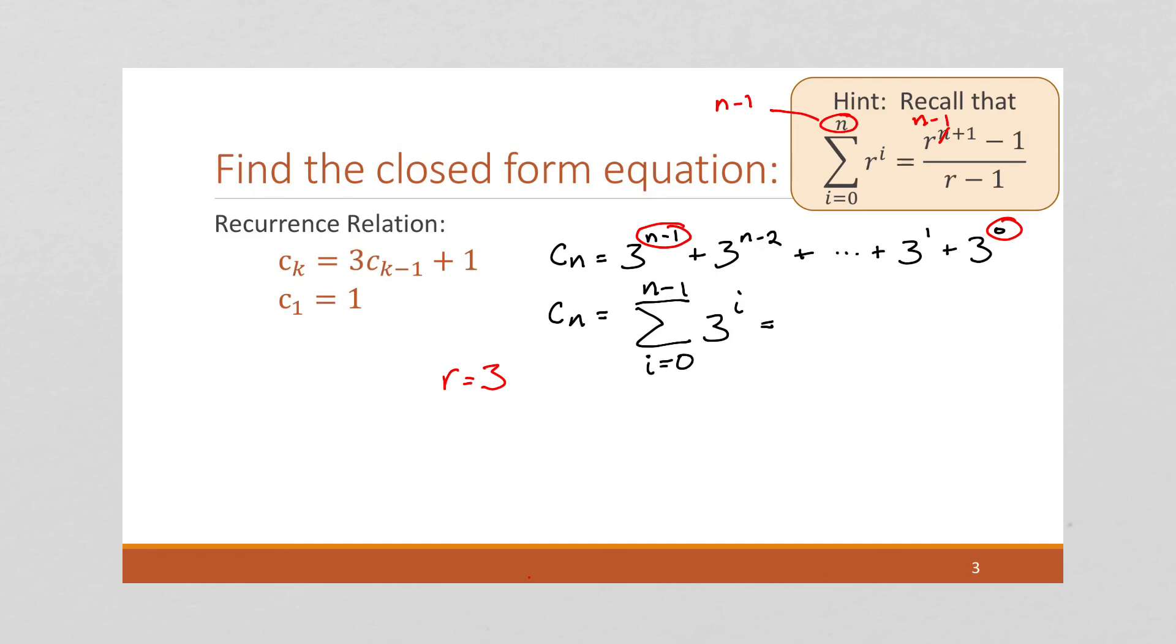And this is kind of the confusing part. We're going to replace this with n minus 1 because that's what we have for our upper bound. So this is going to be n minus 1. So we're going to have that this is 3 to the n minus 1 plus 1, so n minus 1 plus 1 minus 1 over 3 minus 1.